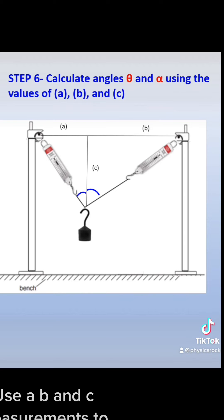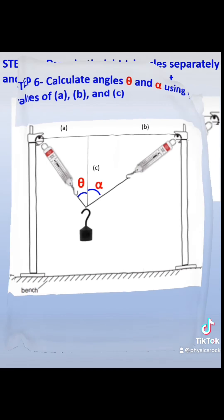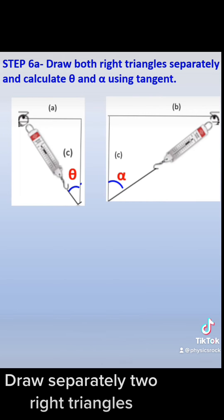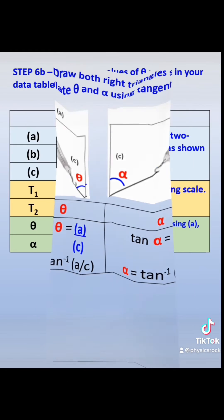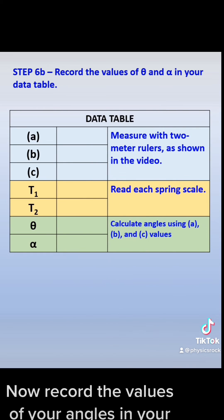Use b and c measurements to calculate angles theta and alpha. Draw separately two right triangles. Use tangent of angles theta and alpha to calculate the value of each angle. Now record the values of your angles in your data table.